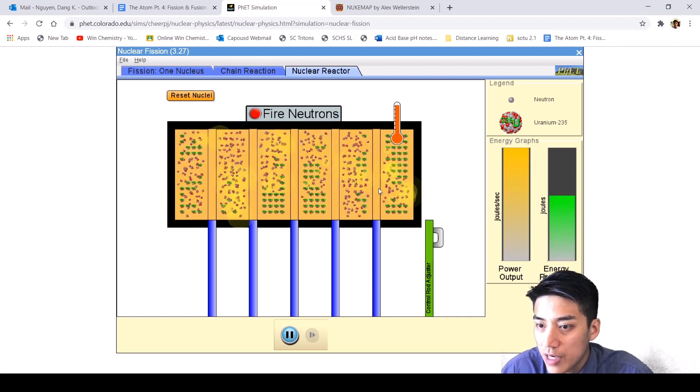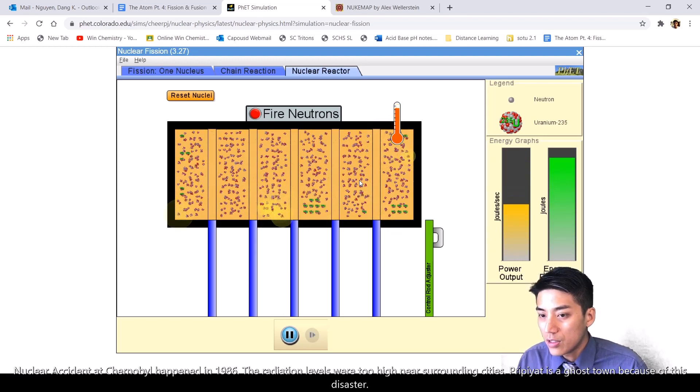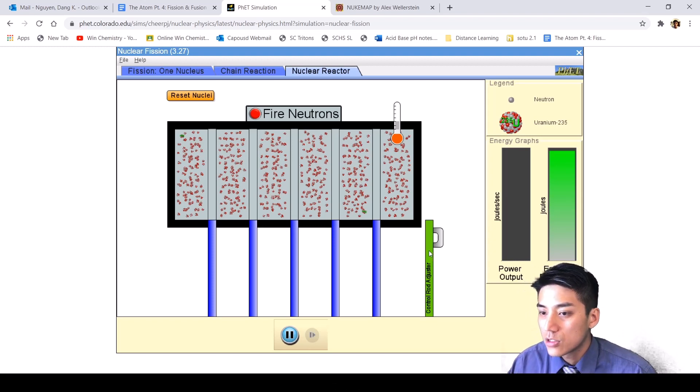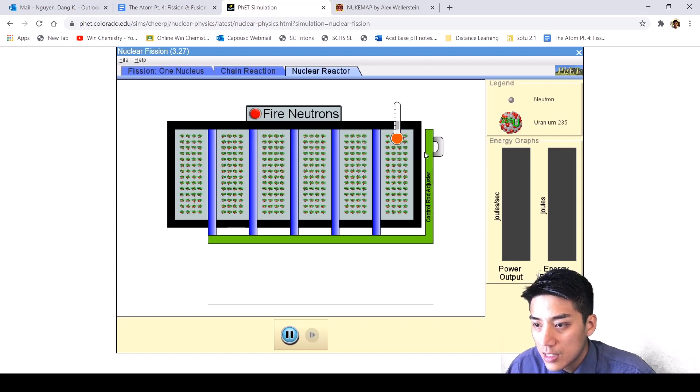So this is a runaway chain reaction. And this is what happened at Chernobyl, where you had a chain reaction that could not be stopped. And it led to a nuclear meltdown. And there was a release of a lot of radiation all across Europe from this one accident at Chernobyl.